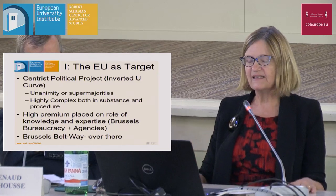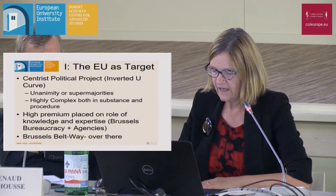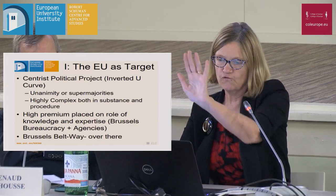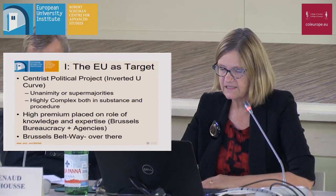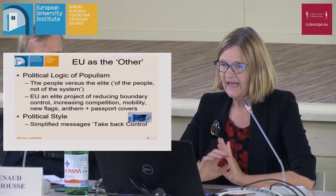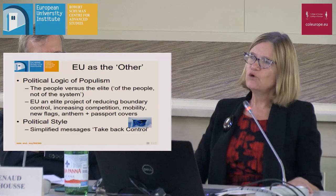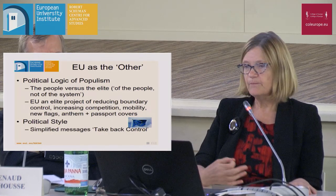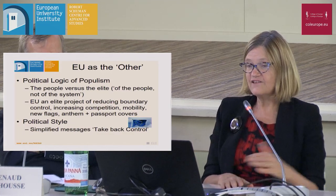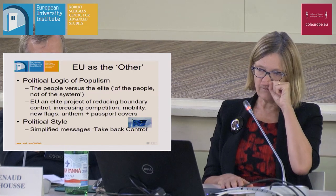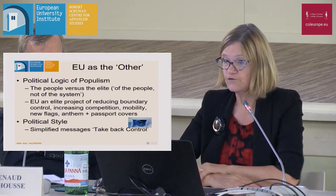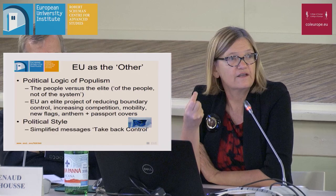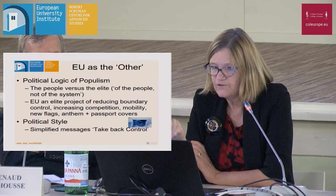There is always the Brussels Beltway, like the Washington Beltway in the US. Brussels is distant from domestic politics and from the capitals. The EU can also be very easily mobilised as the other. The logic of populism is the elite versus the people — there is an authentic people, and populists are of the people but not of the system. The EU has been driven by domestic political and economic elites whose purpose was to reduce boundaries, increase competition, increase mobility across borders, and even use the symbols of nationalism. The playbook of nationalism is being used at the EU level.